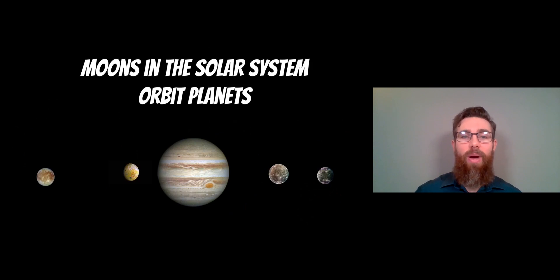Now, if we then think about the moons in our solar system, they will then orbit the planets. So you've got the planets orbiting the sun and then the smaller objects which are orbiting the planets are then known as moons. And here you've got the Galilean moons orbiting Jupiter.